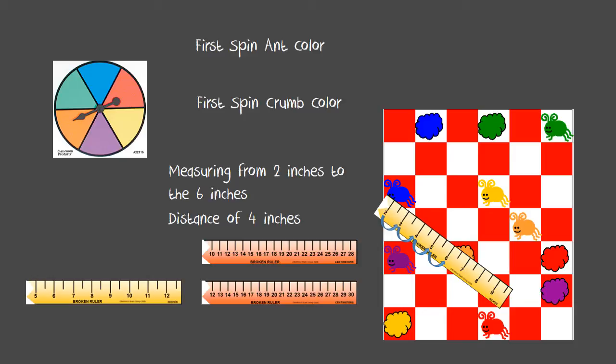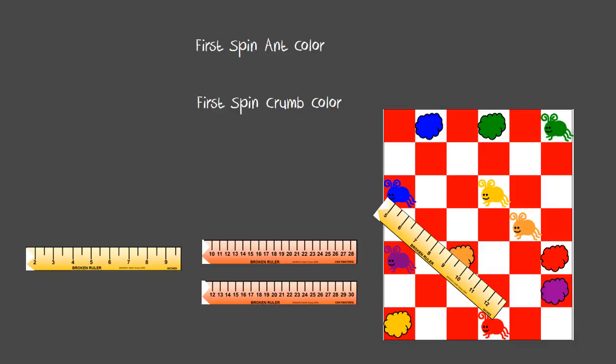Now if somebody else was doing it and they had the ruler that started on the five and they measured it, they too should get the same amount of inches. If they didn't get the same amount of inches, discuss why not. They might have measured from a different point on the ant to the crumb, so they have an idea of why their measurements may have come out differently than the four inches, because nine minus five would be four.